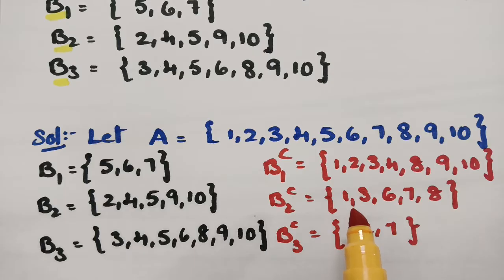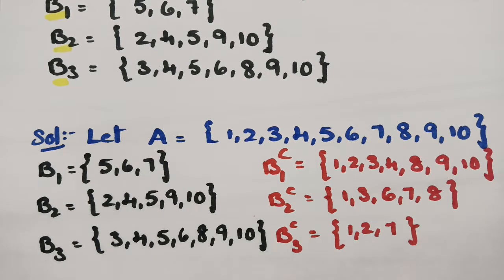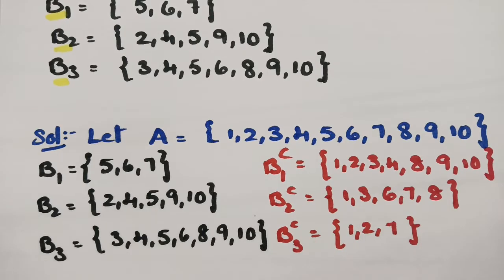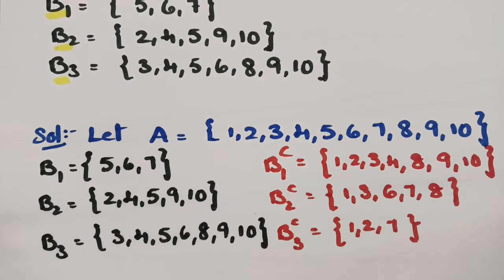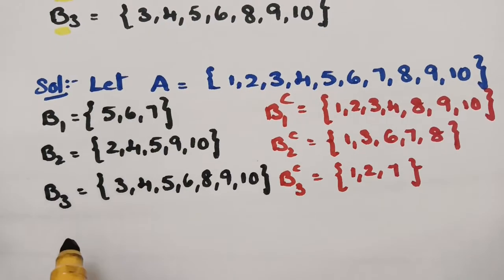After finding the complements, we have to find the MinSets. Since there are 3 subsets, there will be 2 cubed MinSets. 2 cubed means 8 MinSets. So we have to find out all 8 MinSets for this question.